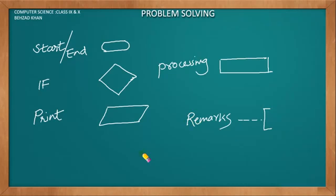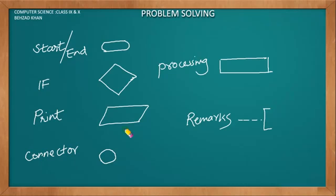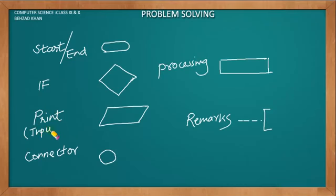For example, I have a very big program and I am building one page or another page. I can use a connector. This is our rectangle — it can use any input or any output. Print is an example. To connect all the symbols, I use arrows.